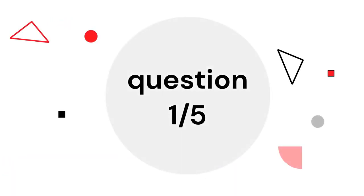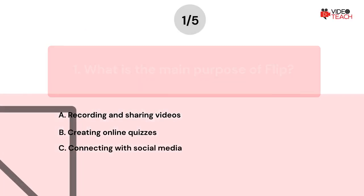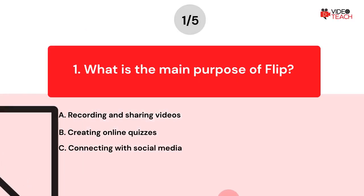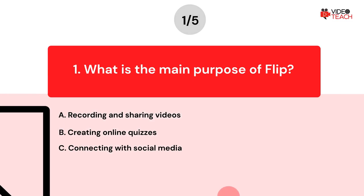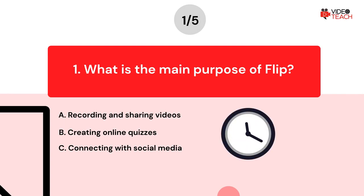Question number one. What is the main purpose of FLIP? Option A: Recording and sharing videos. Option B: Creating online quizzes. Option C: Connecting with social media. Now you have about 15 seconds to think about your answer.